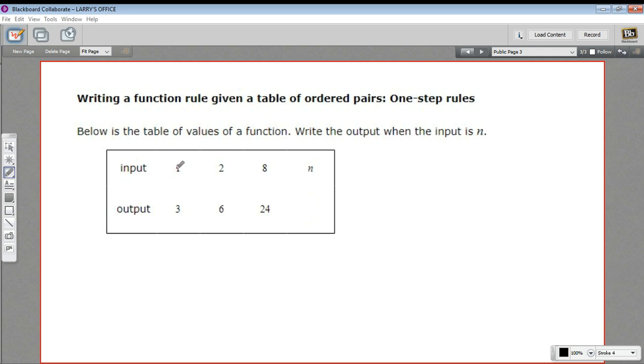Let's take a look at multiplication. One times three would be three. Two times three is six. Eight times three is 24. Aha. So I found something consistent.